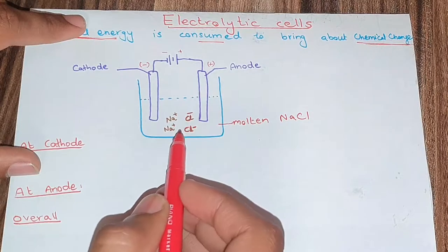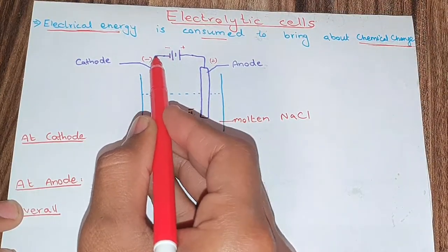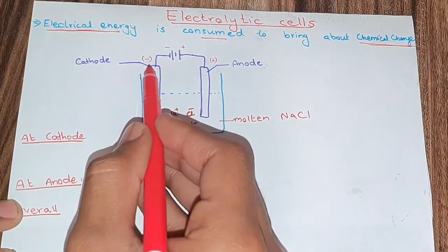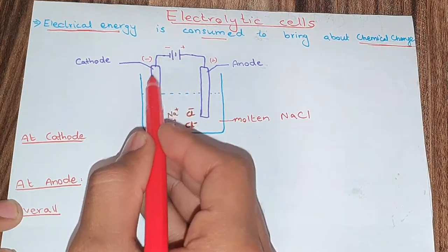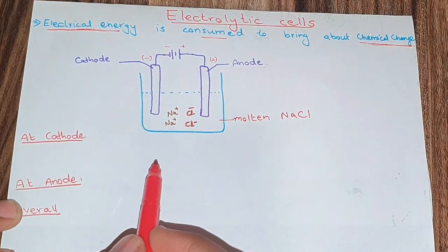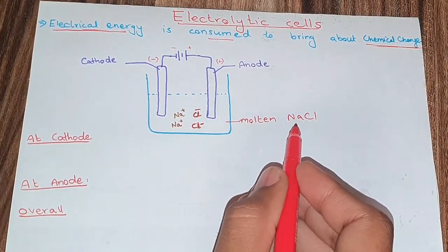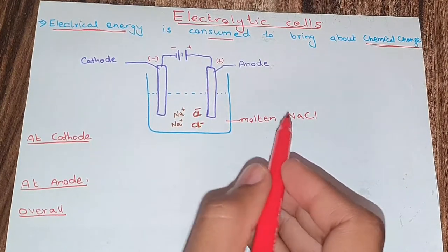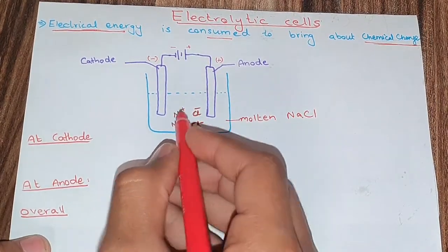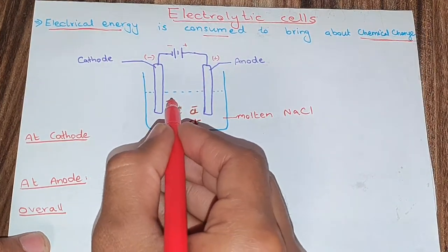The negative terminal of the battery is connected to one electrode, so that electrode gains a negative charge. Since negative charges attract positive charges, the sodium ions in the molten sodium chloride — which carry a positive charge — are attracted by this negatively charged electrode.